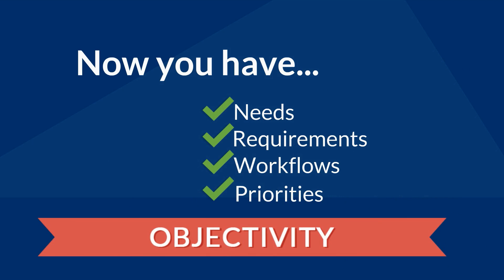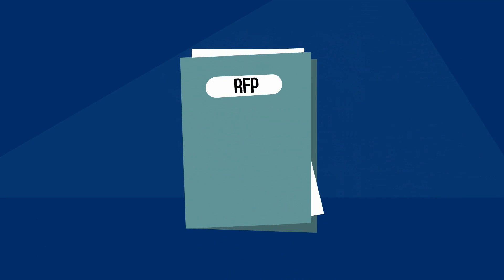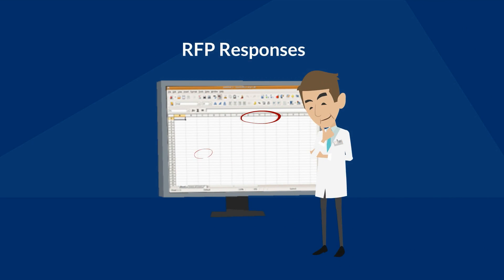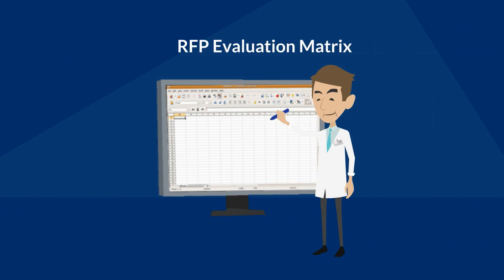You will need to develop a comprehensive request for proposal that should be sent to a variety of LIMS vendors. Be sure to give each vendor the same information and amount of time to respond. When you analyze the RFP responses, you must do so objectively, so creating and using an RFP evaluation matrix with a scoring and weighting system is highly recommended.